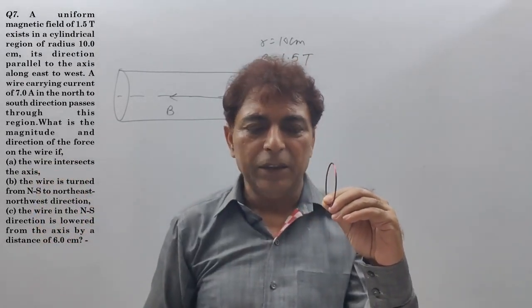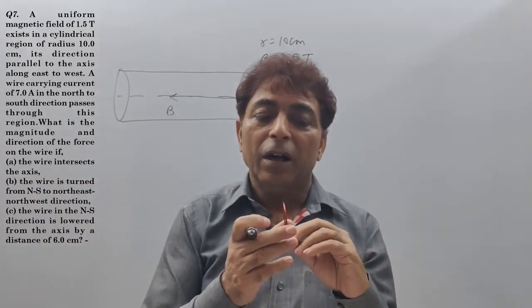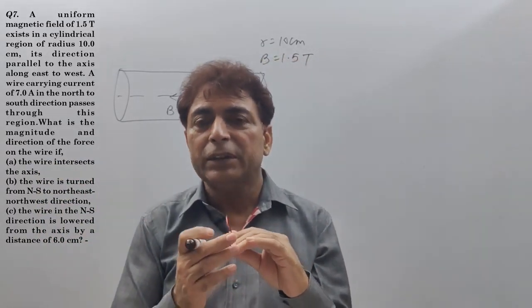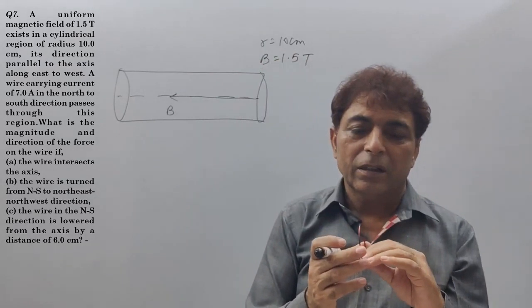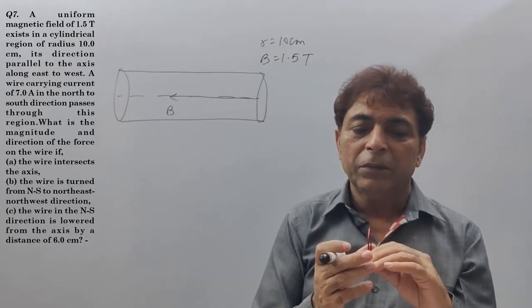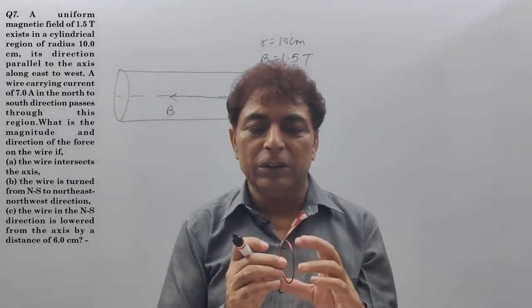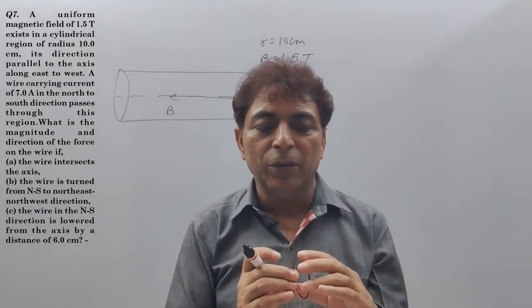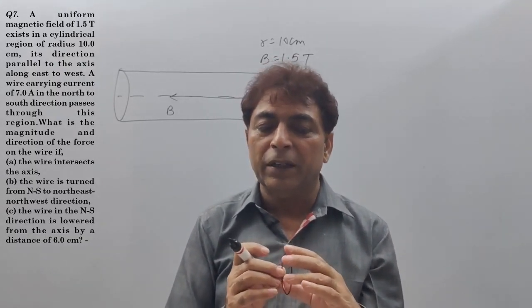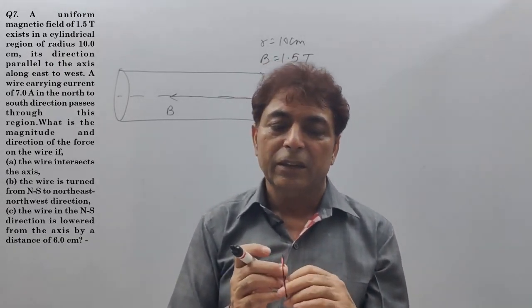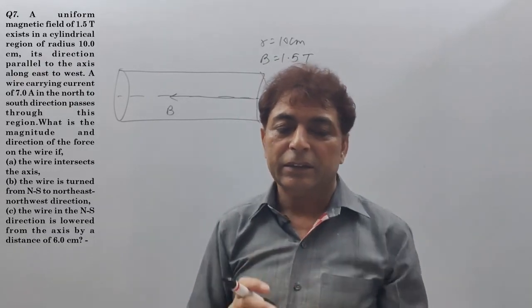Radius is 10 cm. A wire carrying a current of 7 ampere in the north to south direction passes through this region. What is the magnitude and direction of the force on the wire if the wire intersects the axis?